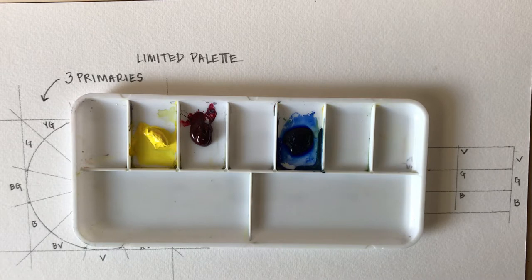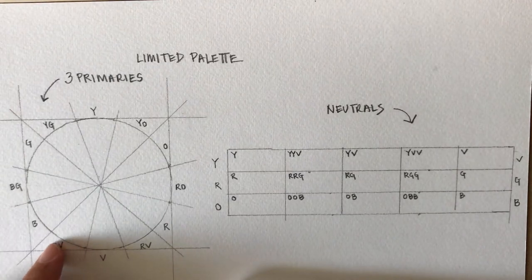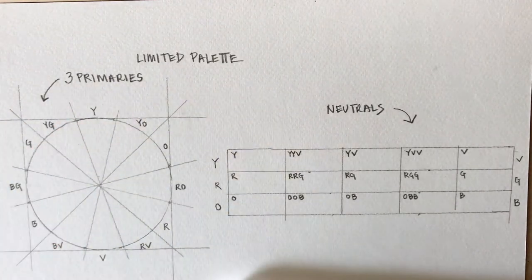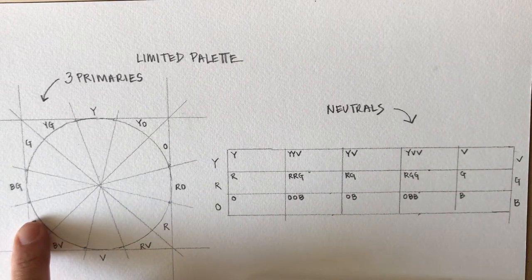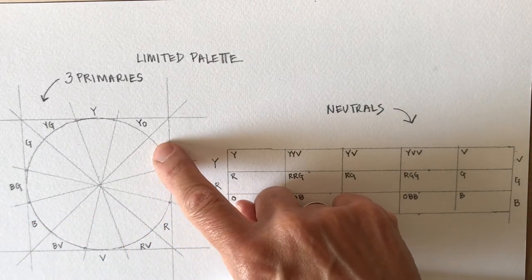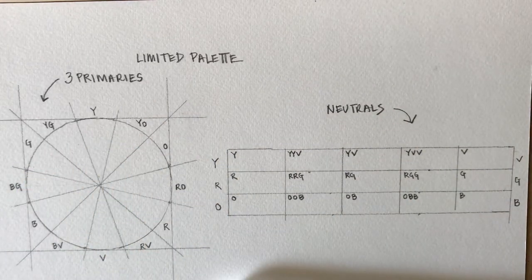Not only in terms of a classic color wheel, like what you see here, where you have yellow, red, blue for your primaries, you have orange, violet, and green for your secondaries, and then the colors that happen in between those.